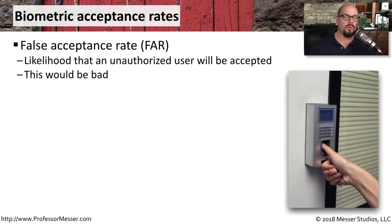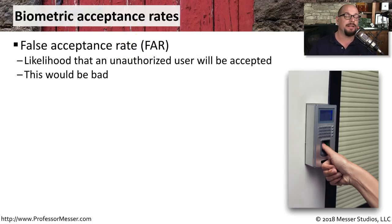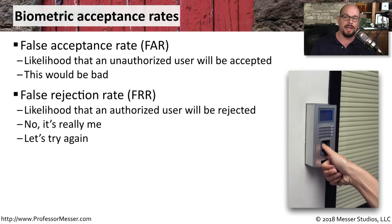Providing access control with biometric data isn't always a perfect science. One way to measure how well biometrics are working is by using a false acceptance rate, or FAR — this is the likelihood that an unauthorized user would be able to gain access with biometrics that don't belong to them, which would obviously be a very bad situation. On the reverse side is the false rejection rate, or FRR — this is the likelihood that someone is providing valid biometrics but those biometrics are being rejected, even though it is truly an authorized user.